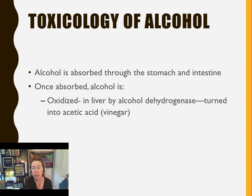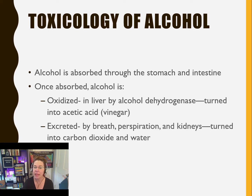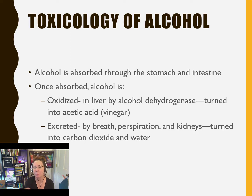The specific alcohol we're talking about here is ethanol. We'll watch a short video clip about what happened when people consumed methanol during prohibition, because the effects were very different and much more deadly. The products of oxidation are excreted by the body through the breath, perspiration, and kidneys — essentially turned into carbon dioxide and water over time, as the acetic acid is broken down into sugars in the body.